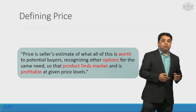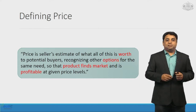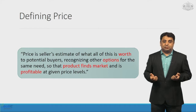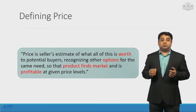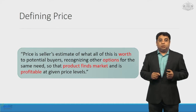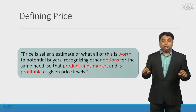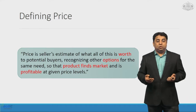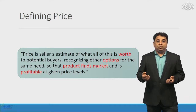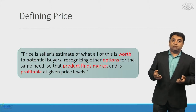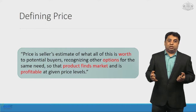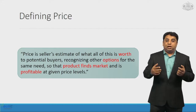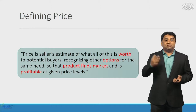How do we formally define price? Here is the definition: price is the seller's estimate of what all of this is worth to potential buyers, recognizing what options they have for the same. When you want to buy a bike, you naturally have many options, and when setting a price for my bike, I have to take into consideration what options are available to you, how you would evaluate each option, and how you would see value in each product available to you.